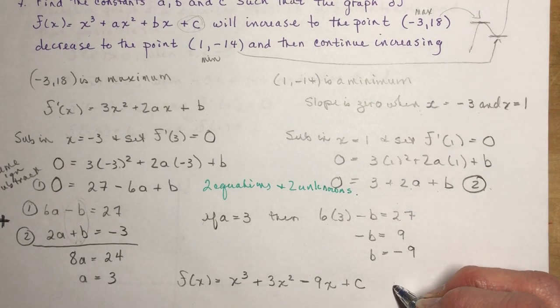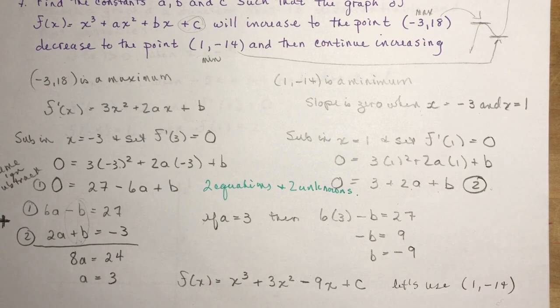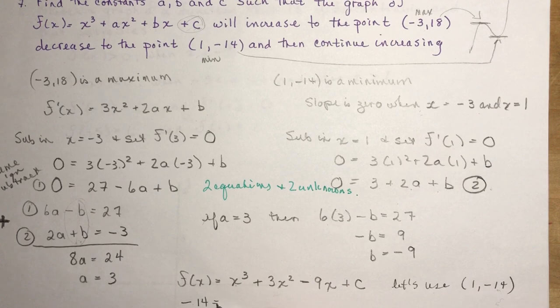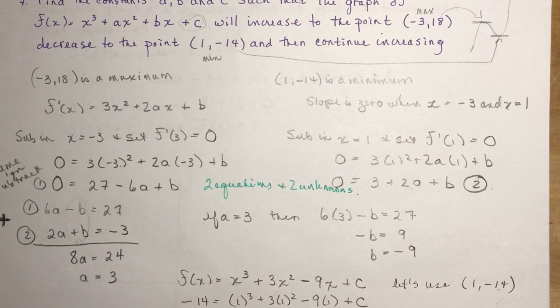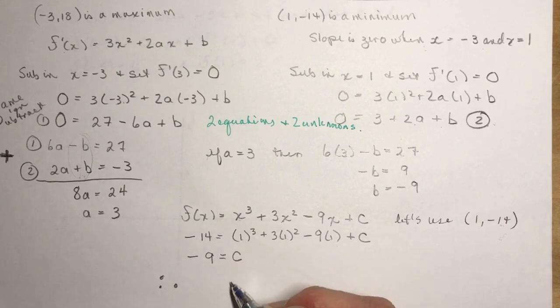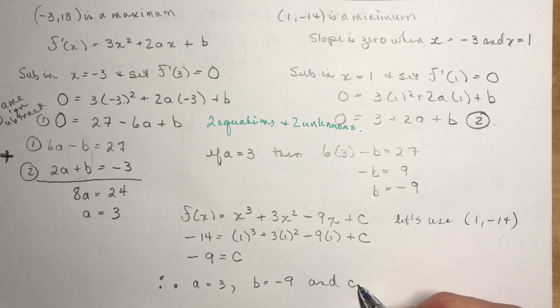So I'm going to use (1,-14). So you can see that if I plug in x = 1, and f(x), so that's my y value, is -14. So -14 = 1³ + 3(1)² - 9(1) + c. So this is 1, and this is 3 is 4, minus 9 is -5. I add 5 to this side. That gives me -9 = c. And so therefore, a = 3, b = -9, and c = -9.